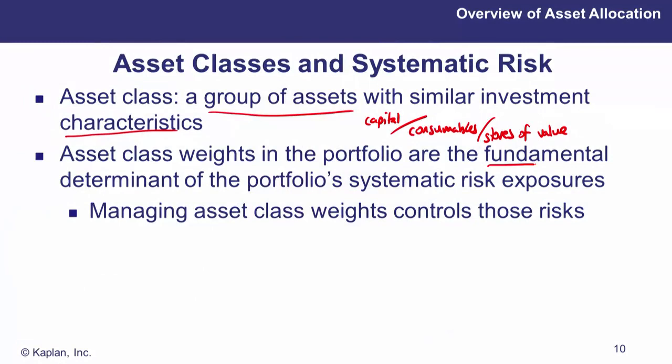An important takeaway is that the decision on how much of the portfolio to allocate to each asset class is the most important decision. It's the fundamental determinant of the portfolio's risk exposures and the fundamental determinant of the portfolio's overall performance. We can manage the asset class weight — increase or decrease the proportion to equity or bonds — in order to manage the risk profile of the investments.